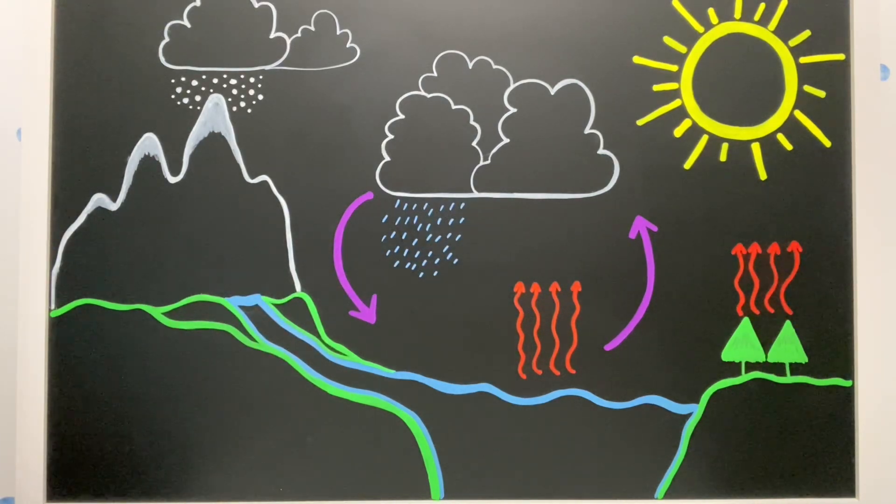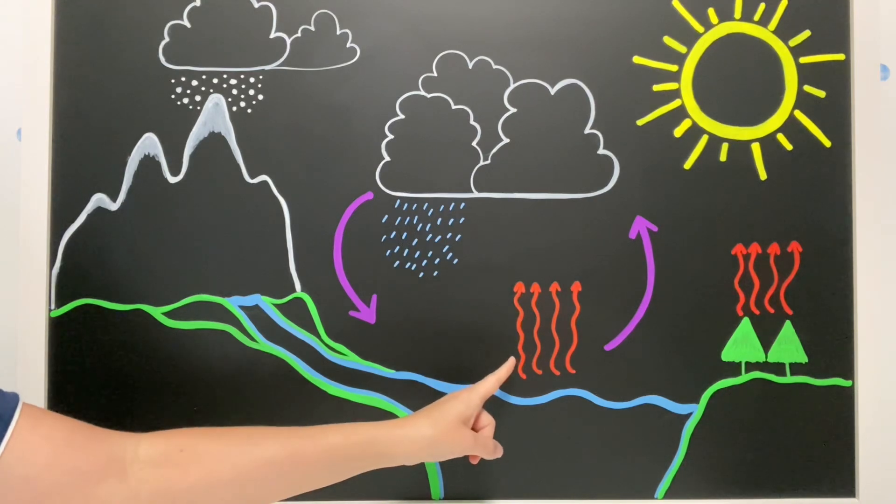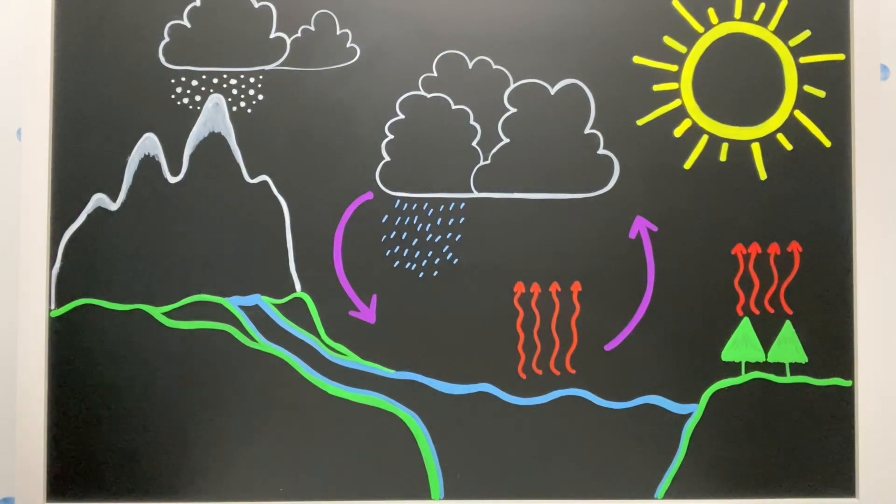And you're also probably thinking, Miss G, what are those red squiggly lines or those purple arrows? Well, let's talk about those.